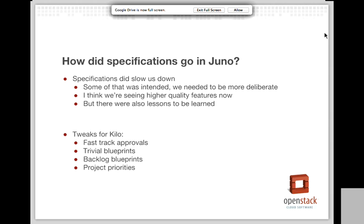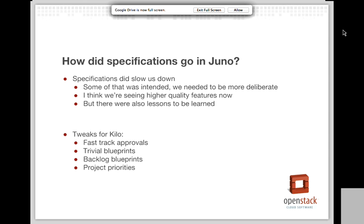Specifically, specifications did slow us down. Some of that was intended — we needed to be more deliberate about the features we were writing so that we got them right the first time. Because of that, we're seeing higher quality features now and we're definitely rewriting features less than we used to. But we also learned that's not something we always have to do, so we've made some tweaks to the specification process for Kilo. We now have the concept of fast-track approvals. A fast-track approval happens when you had a Juno specification but for whatever reason it didn't manage to get into Juno. A single reviewer can look at the specification and say, yes, this still makes sense, go. That meant we didn't have to pause the development cycle at the start of Kilo to get a lot of paperwork done.